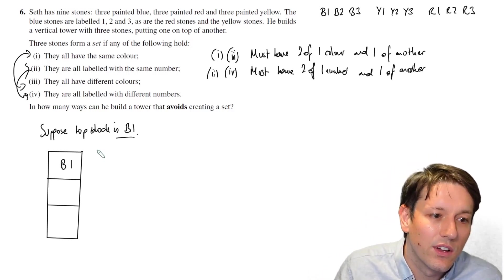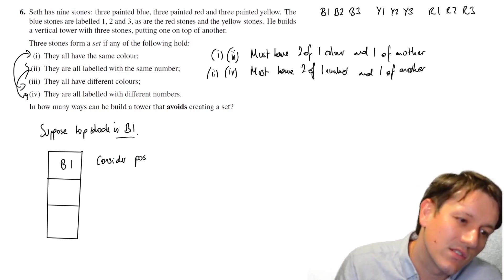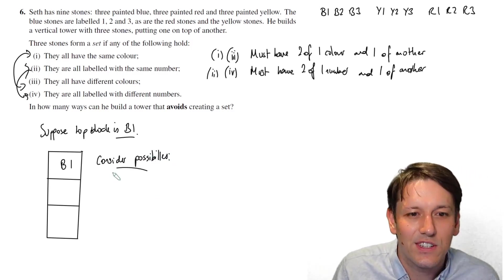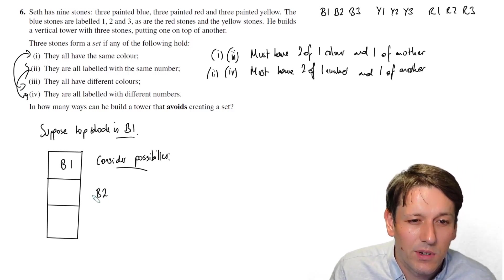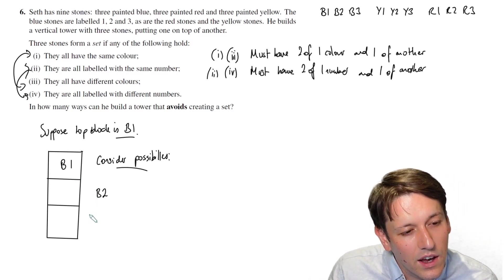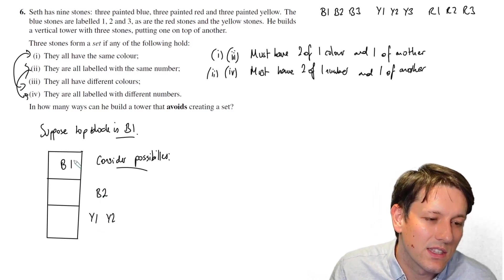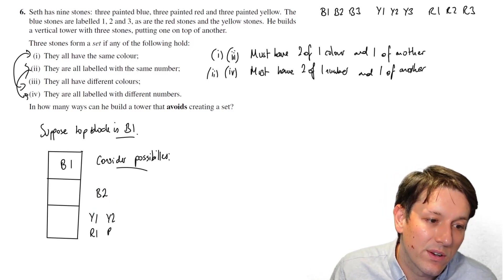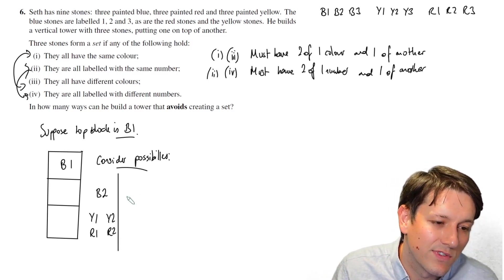Now let's think about the possibilities for the others. I think I can solve this with a table quite efficiently. If I put B2 next, then on the bottom I can't have another blue one, so I can only have a yellow. I could have yellow one, and I could have yellow two, but I can't have yellow three because that would make all of the numbers different. Or I could also have red one or red two. So this gives me four options.